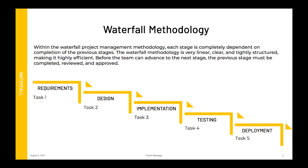Before getting into the definition of V model, let's understand what waterfall is. Waterfall is a project management methodology in which each stage is completely dependent on the completion of the previous stage. It starts from requirements, design, implementation, testing, and deployment. It is a very linear, clear, and properly structured methodology. If we want to complete the design, there is a dependency on requirements, and once completed it must be reviewed, approved, and then we move to the next stage.